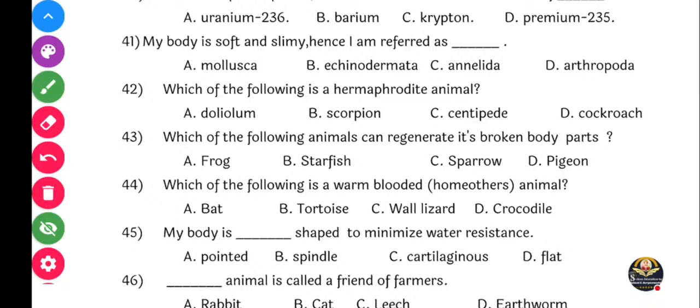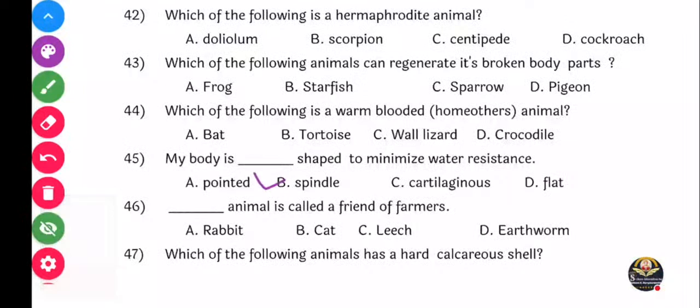Next question: My body is dash shaped to minimize water resistance. Water resistance hou nahe yaya sati ma chae body kuntha shift chhi ahe - it will be spindle shaped. Spindle manche fish chae body haste tala pan spindle shaped manto. Option B is the right answer.